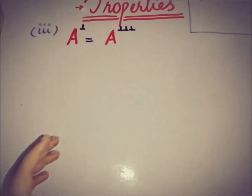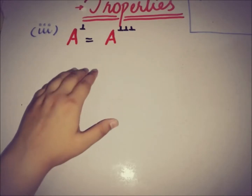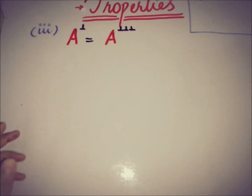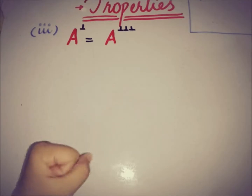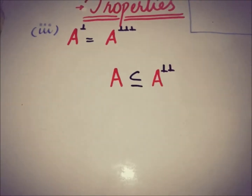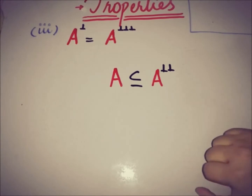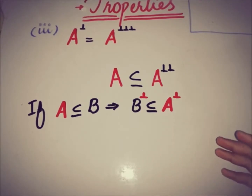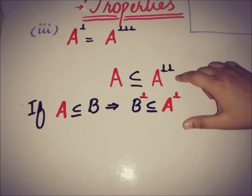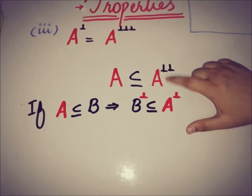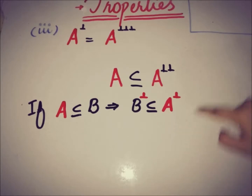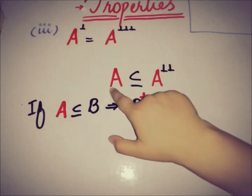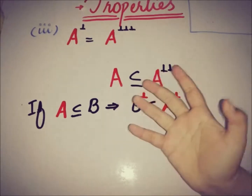This property is satisfied. The third property is that A annihilator equals A triple annihilator, i.e., the annihilator of the double annihilator. The first property gave us A ⊆ A double annihilator, and the second property says if A ⊆ B then B annihilator ⊆ A annihilator. Applying the second property to the first gives us the annihilator of the double annihilator is a subset of A annihilator.